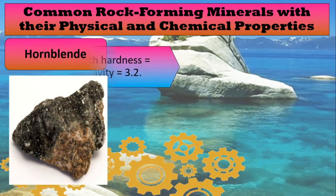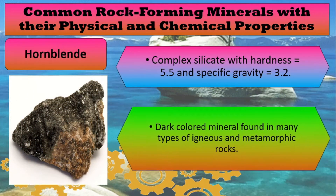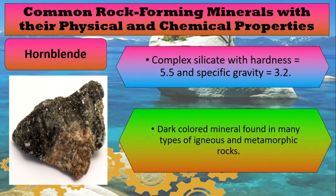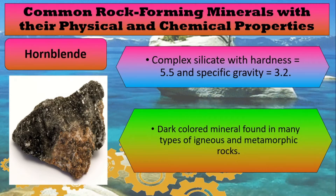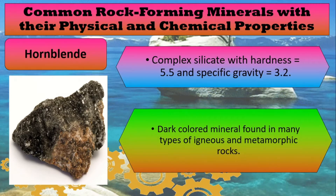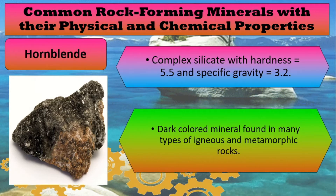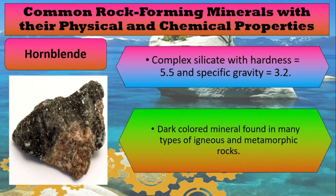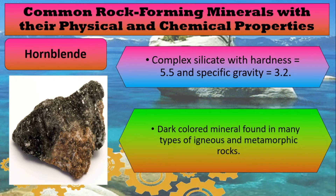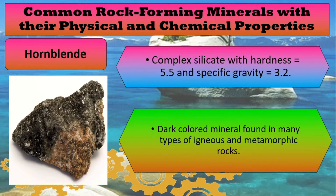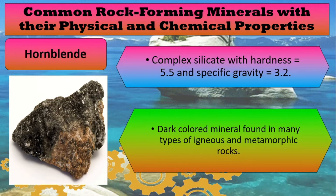Next, hornblende. Hornblende is a complex silicate with a hardness of 5.5 and a specific gravity of 3.2. Hornblende is a dark-colored mineral found in many types of igneous and metamorphic rocks.